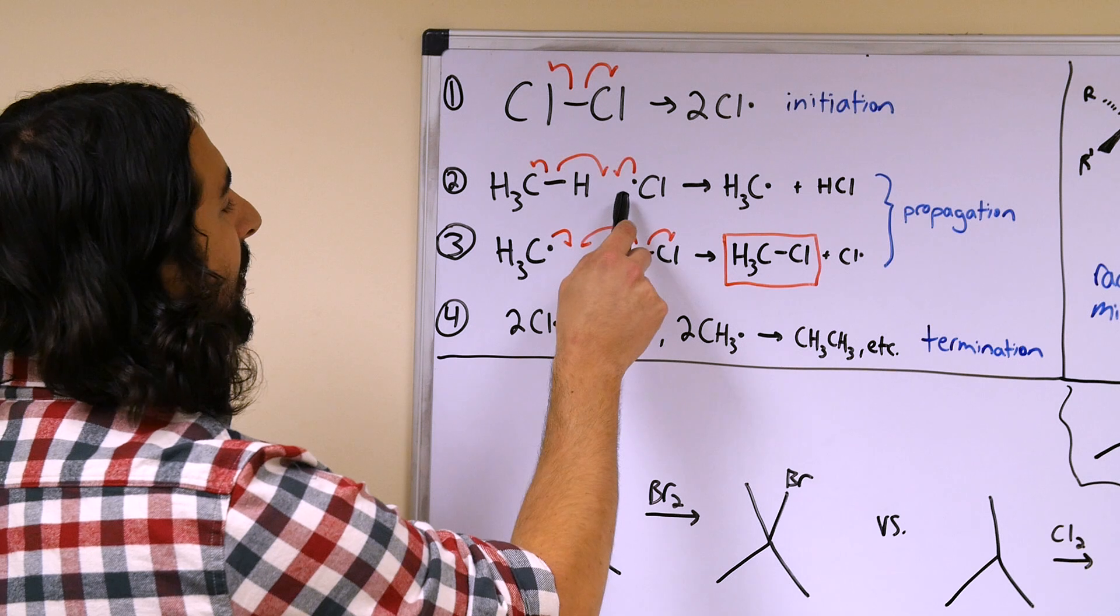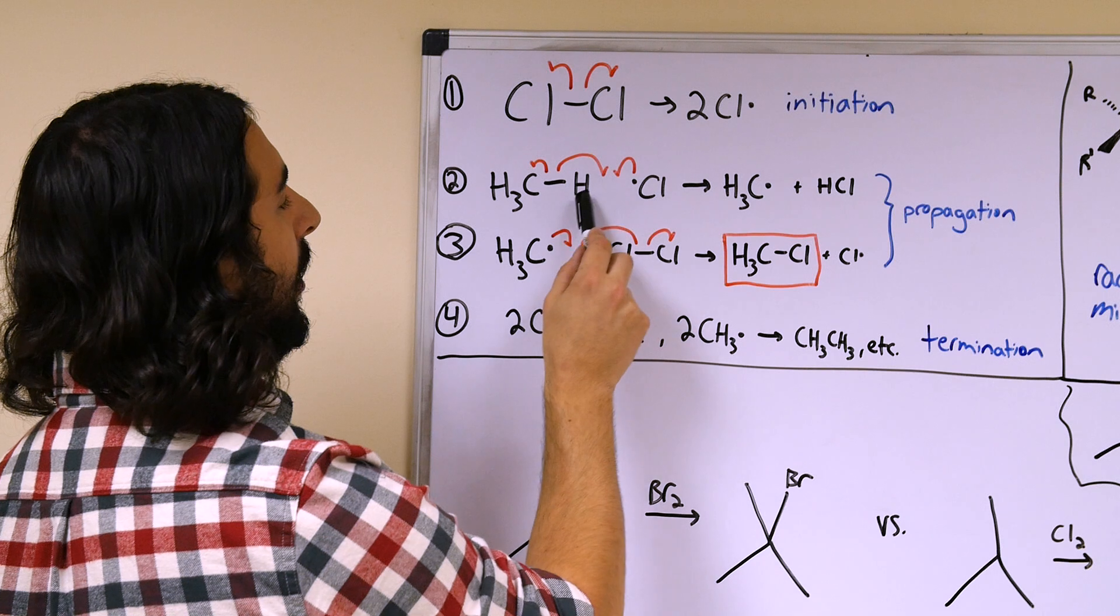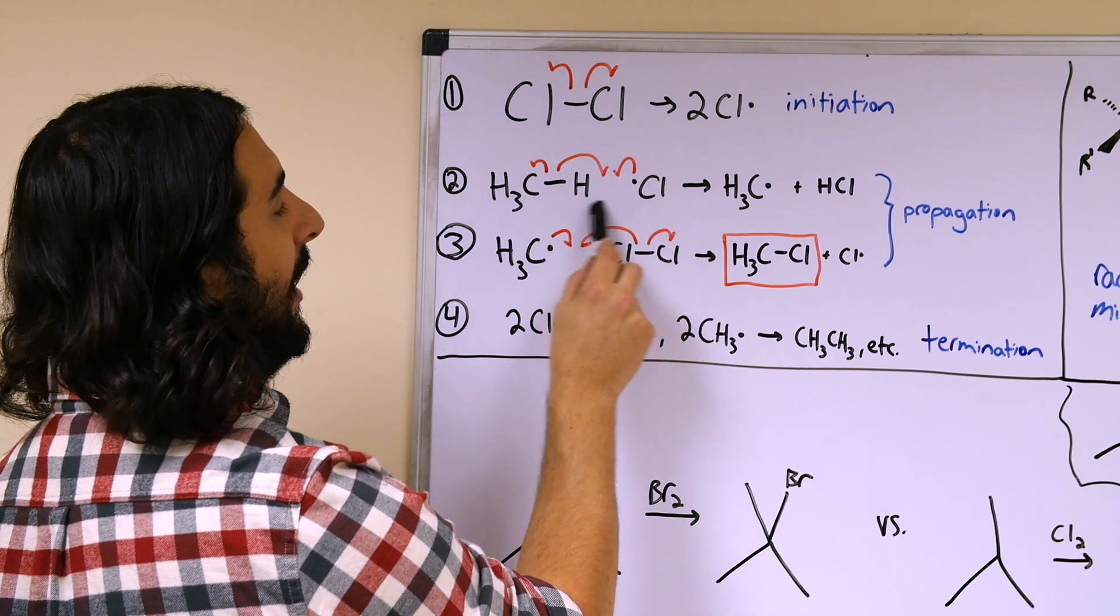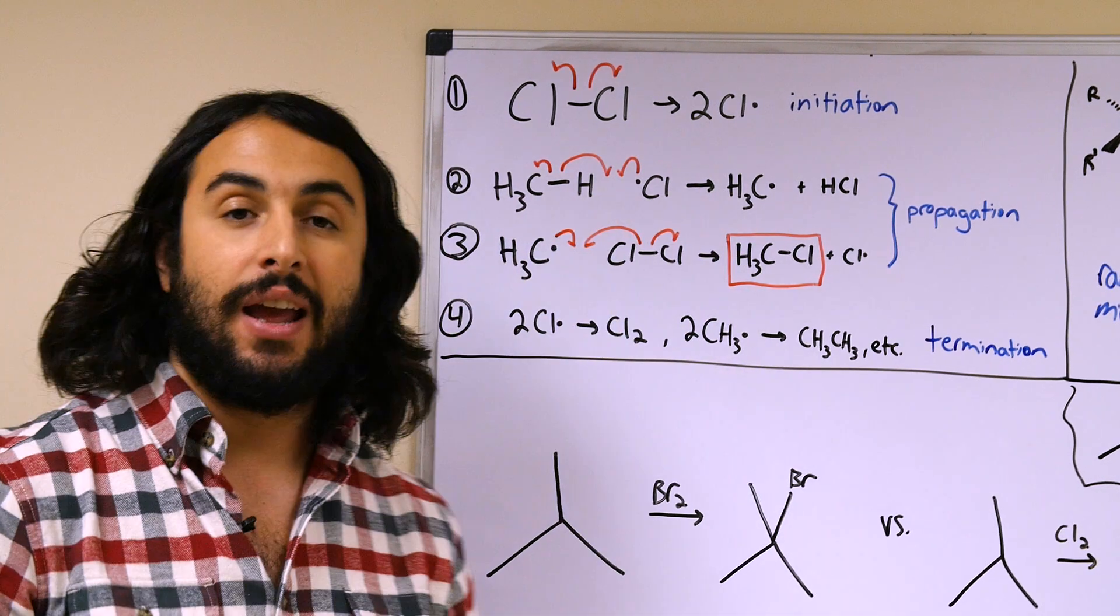Here's a carbon-hydrogen covalent bond. One of these electrons will go here and a hydrogen radical will now make covalent bond with chlorine, giving us HCl.